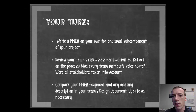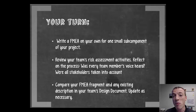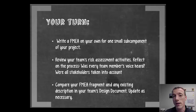Now it's your turn. Write a short FMEA listing the severity, occurrence, and detection for one small subcomponent of your project. Scope it small enough that you only have a handful of items — maybe four to five. Then go back and review your team's risk assessment activities. Think about the process your team took: was every team member's voice heard? Were all stakeholders taken into account? Did everybody come to the table and participate? If not, how could you as a leader help improve that? Finally, compare your FMEA fragment for that subcomponent back to any description you have for risk assessment in your design document and update them as necessary.